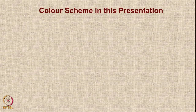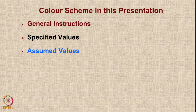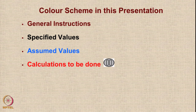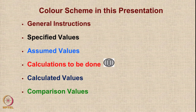The color scheme in this presentation is that the general instructions will be given in brown color. Values specified in any reference source will be shown in black color. Any values that we assume will be in blue color. Places where you should do calculations will be highlighted in red color with question marks and a pause button symbol — wherever you see this button, stop the video, do some calculations, then match with our values. Calculated values will be shown in dark blue, and comparisons with existing aircraft will use green color.